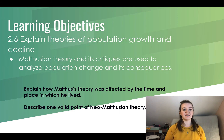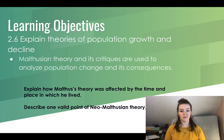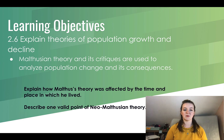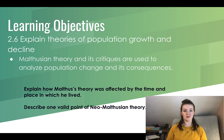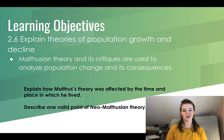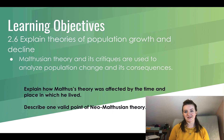So we've explained theories of population growth and decline: Malthus, neo-Malthusians, and their criticisms. In your notebooks, take a few minutes to explain how Malthus's theory was affected by the time and place in which he lived — he was an 18th century British economist — and describe one valid point of neo-Malthusian theory. Re-watch anything you missed, read in your books, and let me know if you have questions.